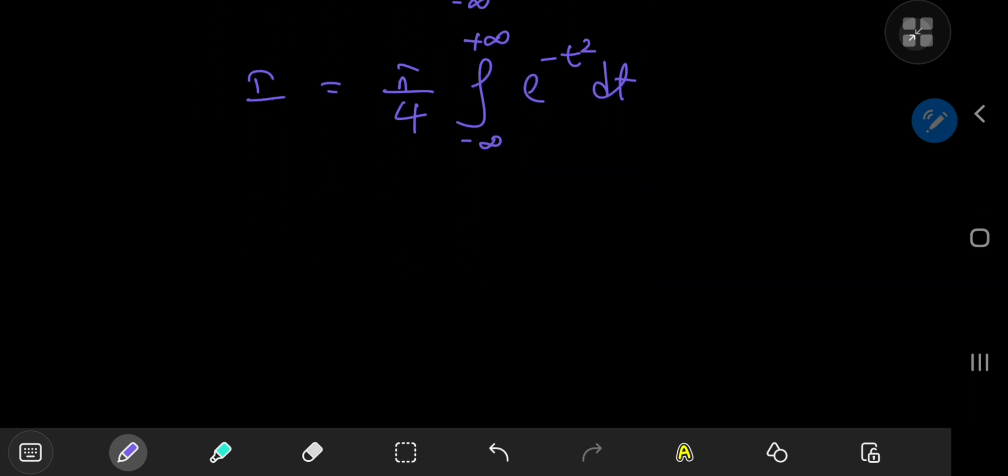And this is the good old Gaussian boy, which I've never really evaluated here on the channel using the traditional technique. And by traditional technique, I mean switching to polar coordinates and all that. I've evaluated using Feynman's trick, and that was a pretty wild ride. So yeah, that was a really cool video. Link in the description below.